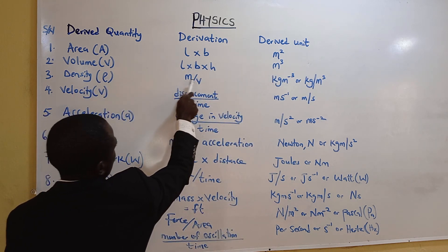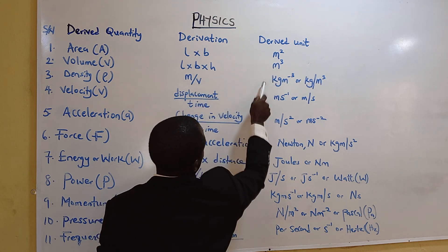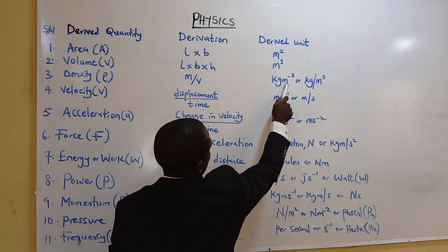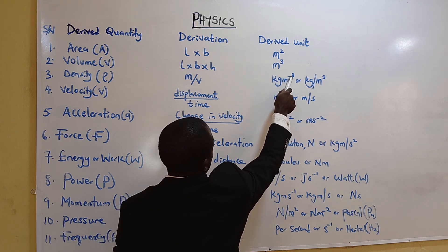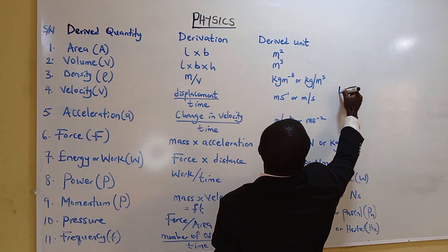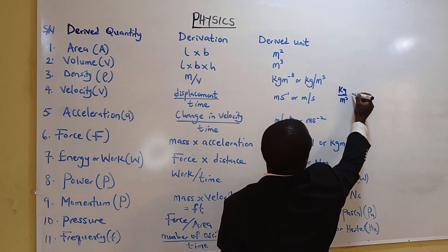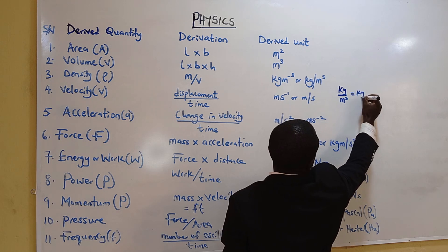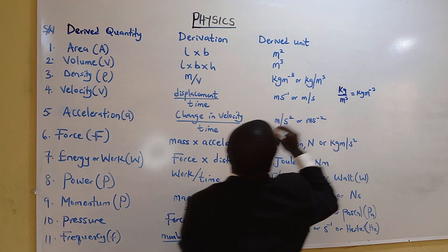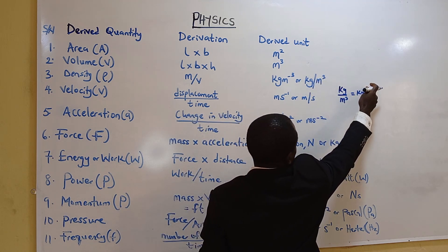Density, mass over volume. The unit of mass is kilogram, volume is meter cube. We are removing this division. Meter will come up, but you introduce negative. Normally it should be kilogram over meter cube, but when you are taking it up, it becomes kilogram meter to the negative 3. When you input negative 3, don't introduce the line again.